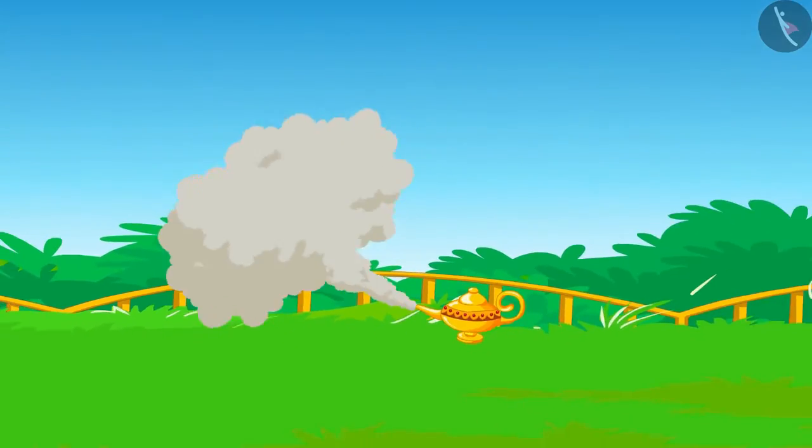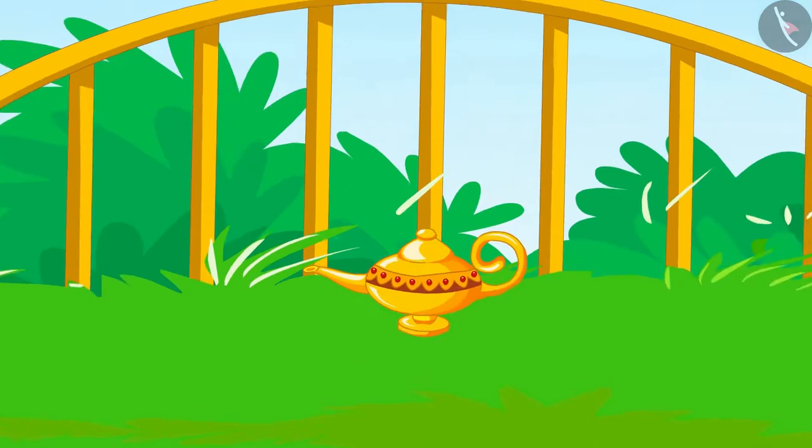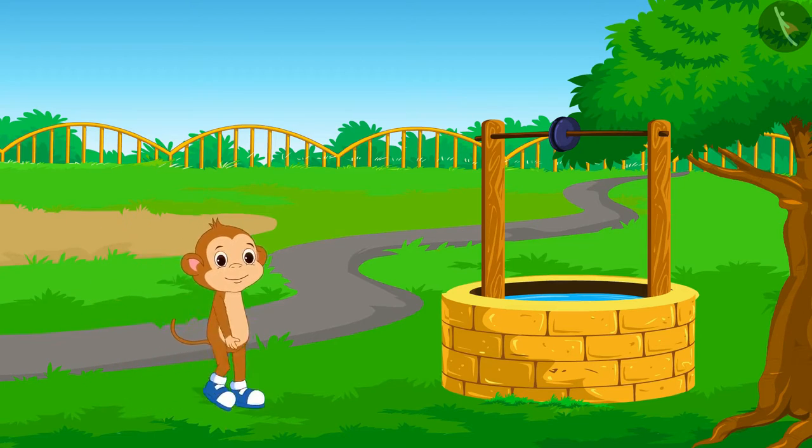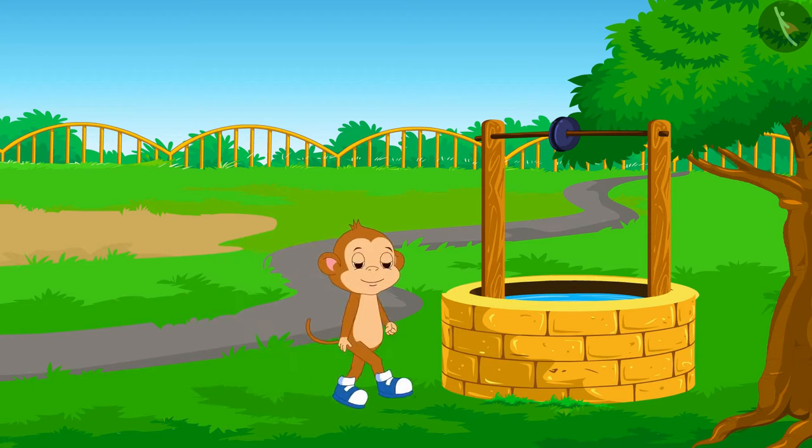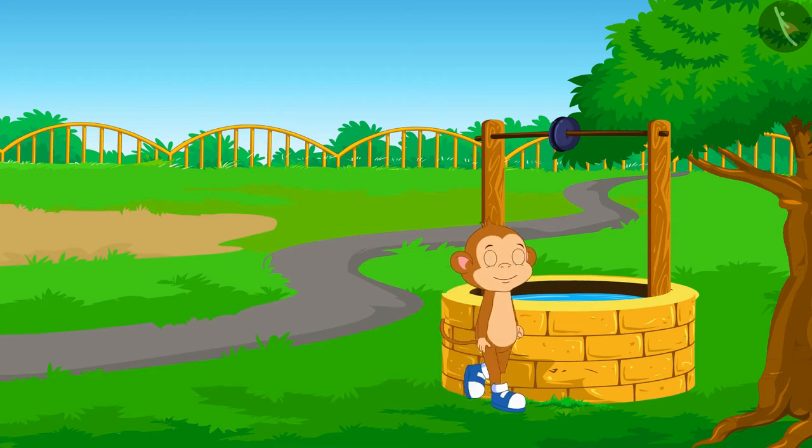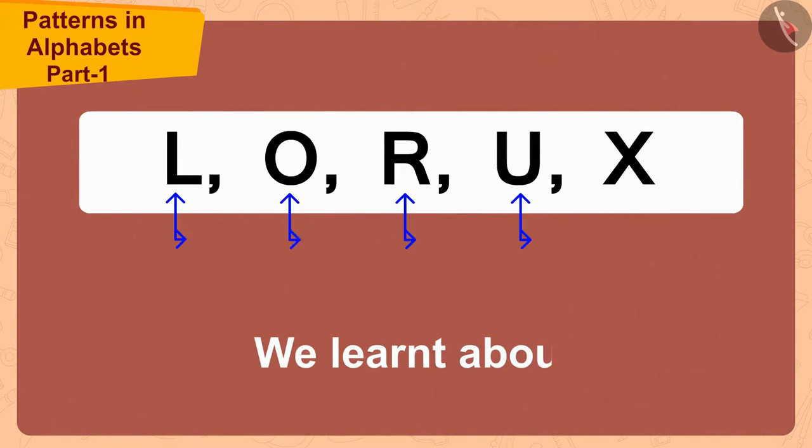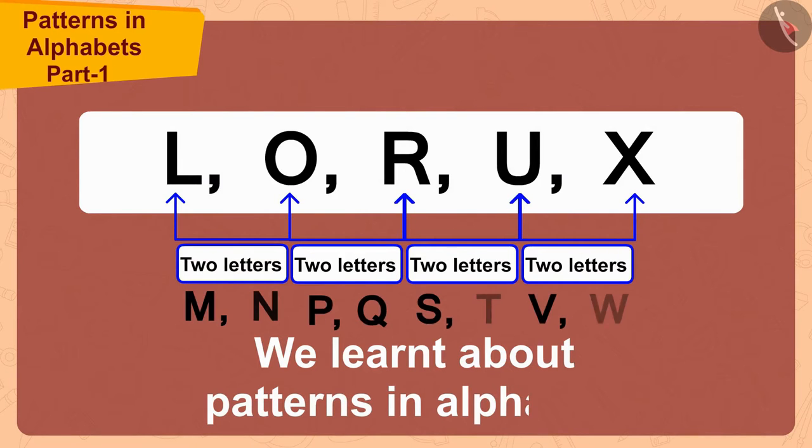The lamp disappeared when Babban's third wish was fulfilled. Babban put on his shining new shoes and happily returned to his home. Children, in this video, we learned about patterns in alphabets.